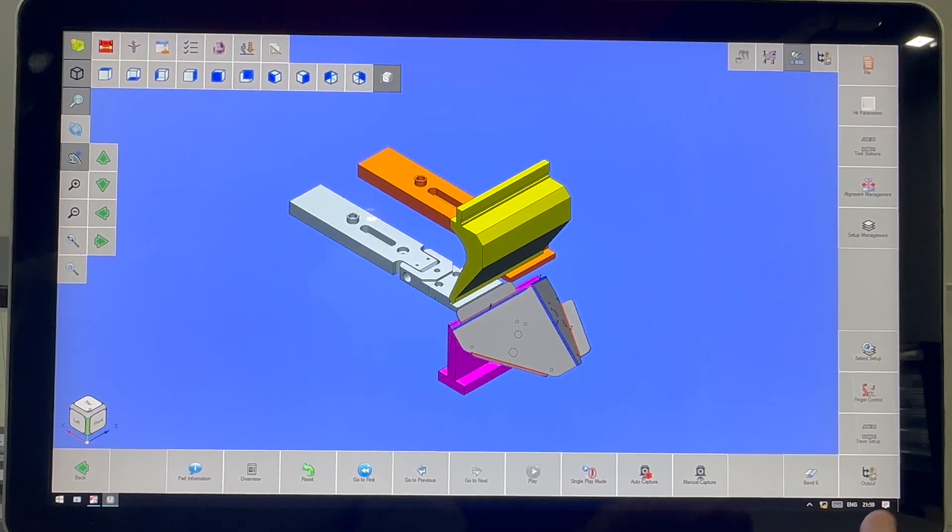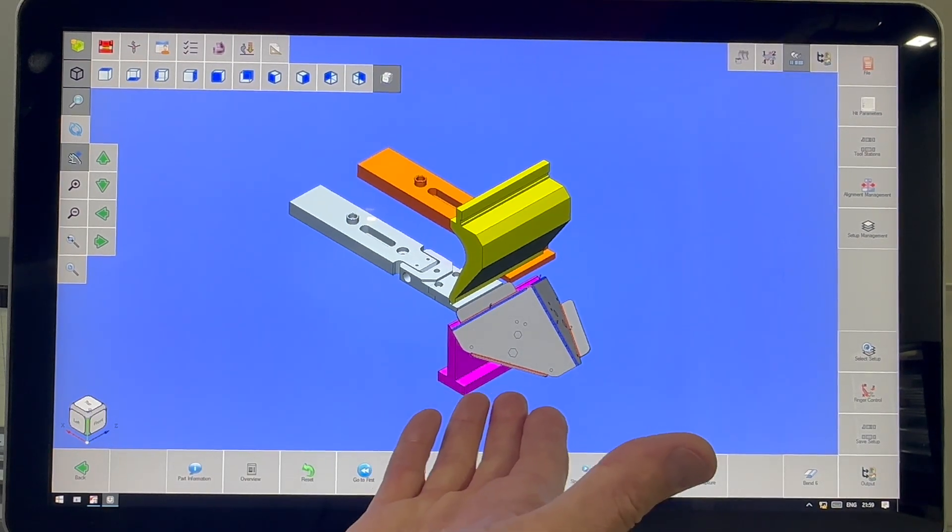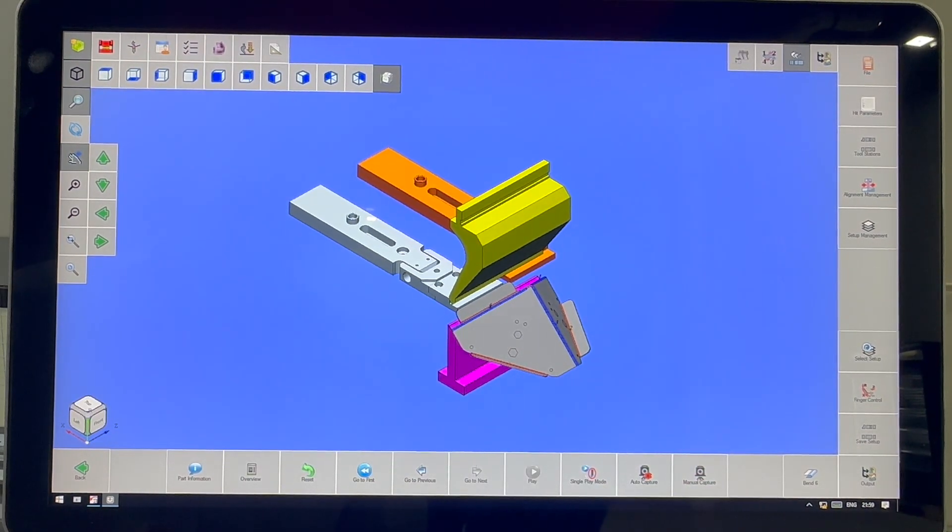And after this, all I got to do is hit output. And what that'll do is generate the codes for the machine motors. And then you go to the run screen and you basically see this step by step as you run the part.